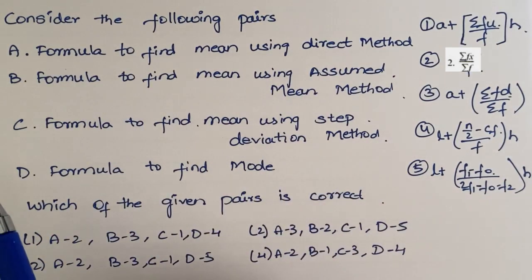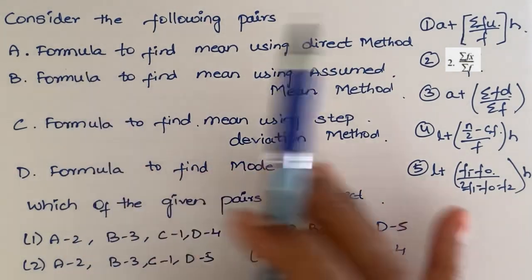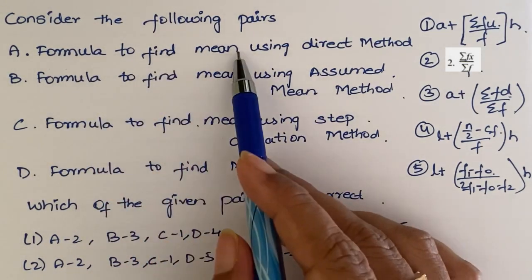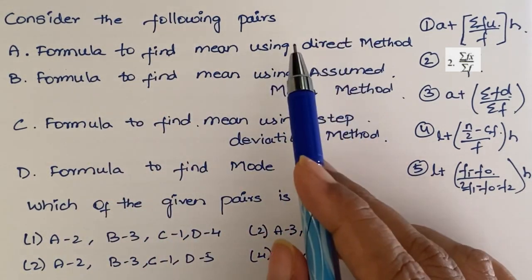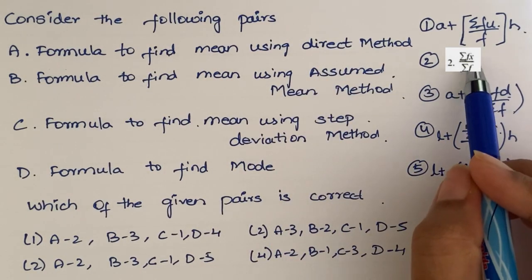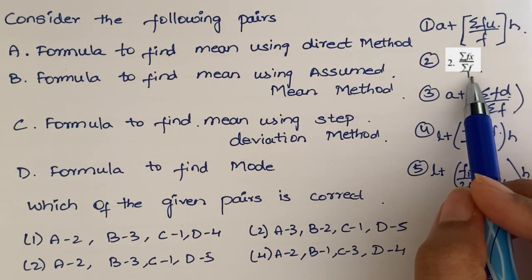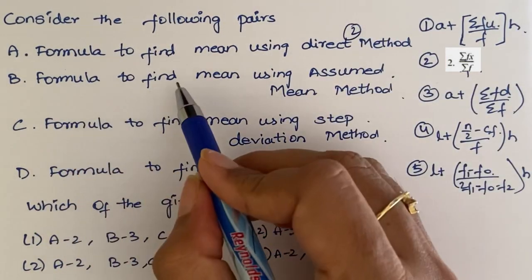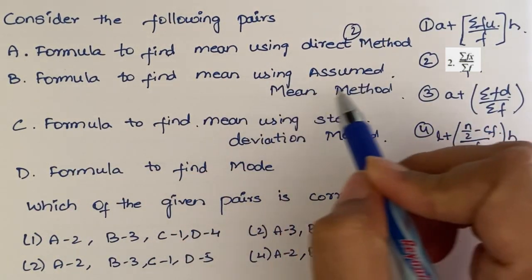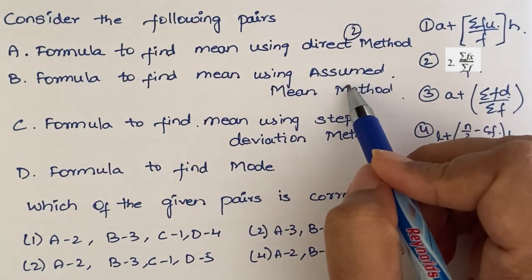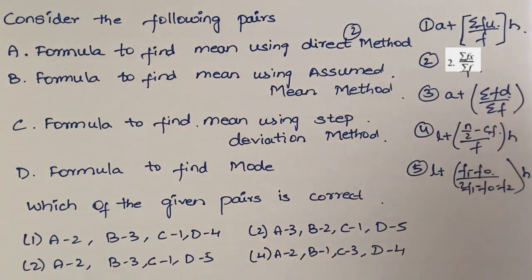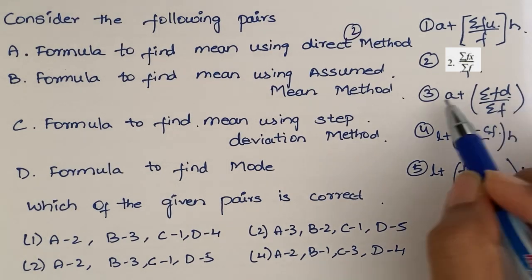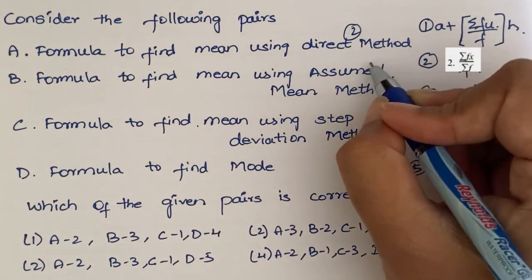Consider the following pairs. Find the mean using direct method. Direct method is simply the formula - sum of observations by total number of observations. So, first one is answer 2. Next. Formula to find mean using assumed mean method. Assumed mean method uses A plus sigma of f into d. So, B is answer 3.